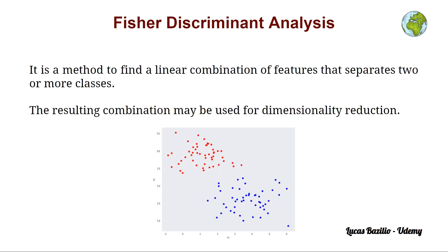It is a method to find a linear combination of the features in this dataset that separates two or more classes. With this combination, we can reduce the dimensionality of the dataset and have a lower dimensional space.